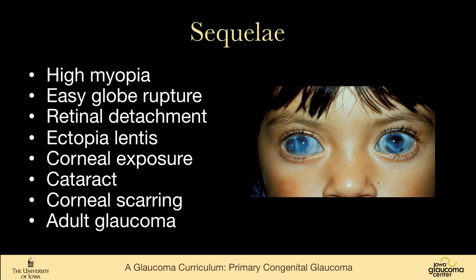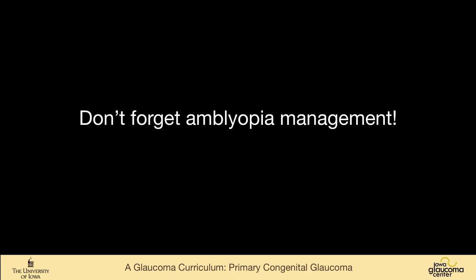There are lots of sequelae that mostly come from the very large eyes: high myopia, easily ruptured globes, retinal detachment, ectopia lentis, corneal exposure, cataract, corneal scarring, and adult glaucoma. We can't forget amblyopia management. Those of us who do glaucoma for a living need to enlist the help of pediatric ophthalmologists to help with this.